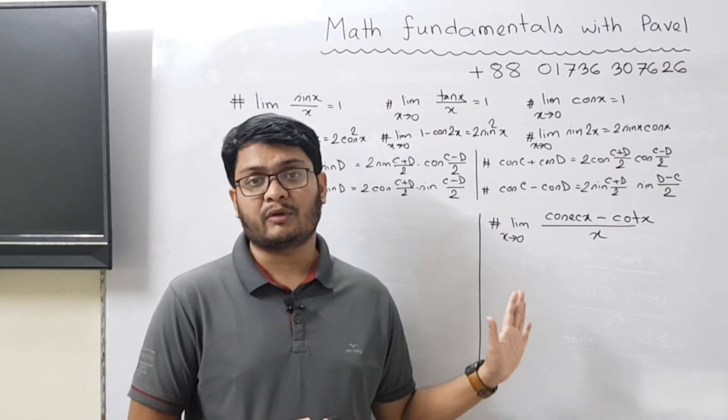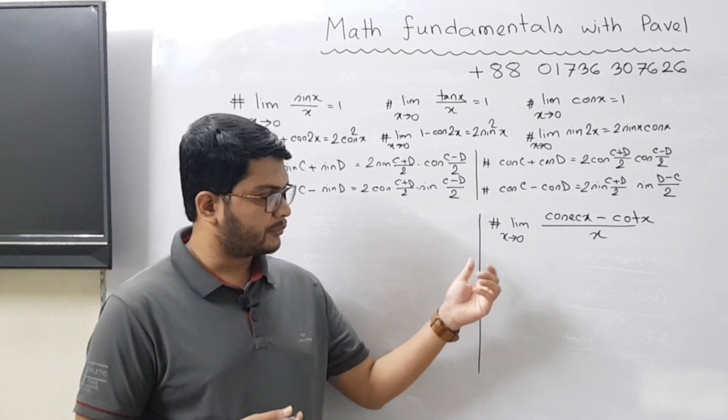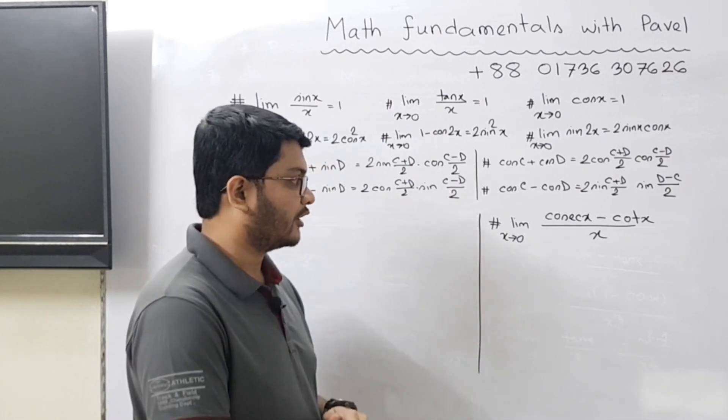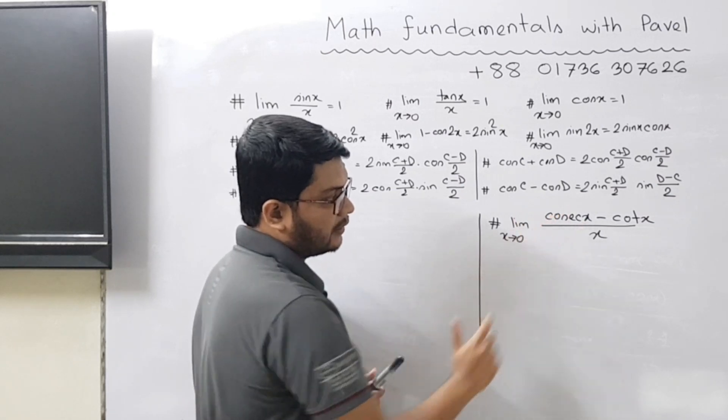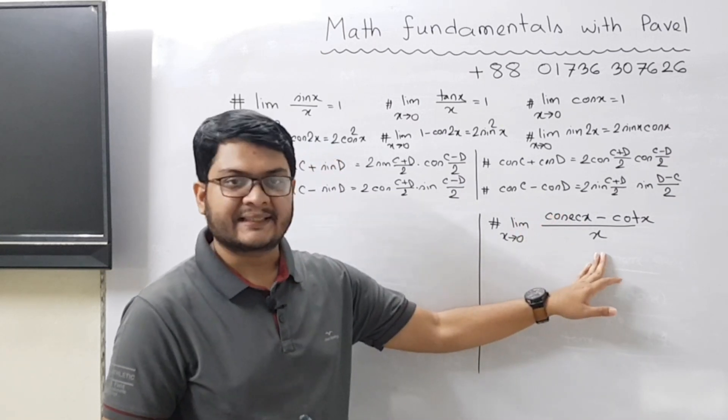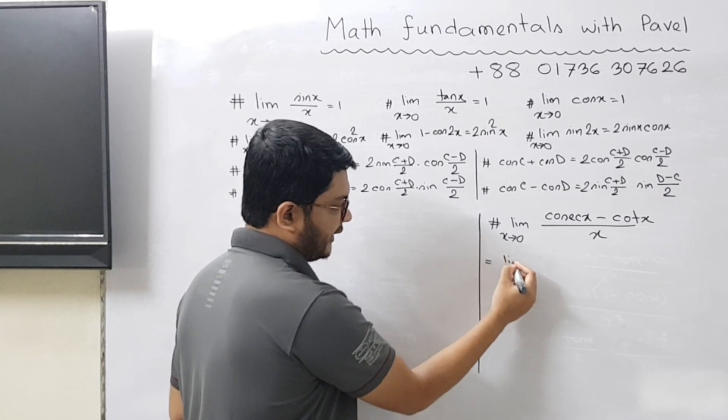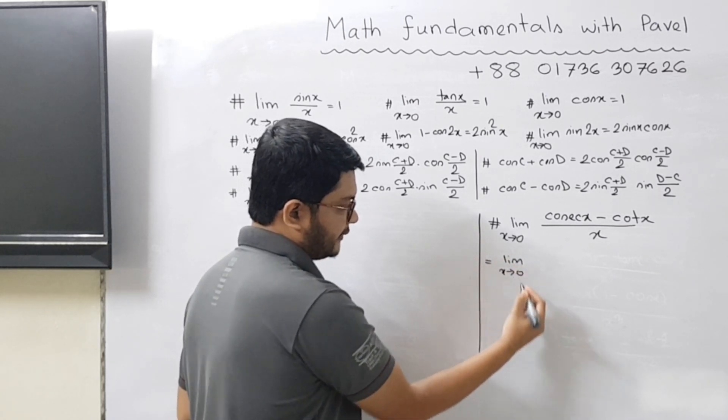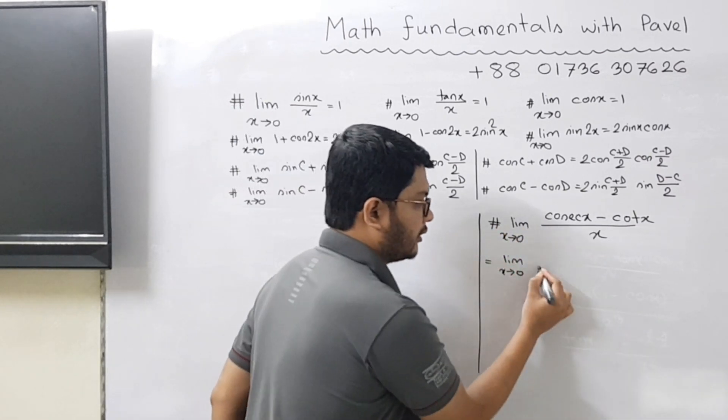That will help you understand this particular video very easily. So let's start. As you can see, the problem statement is already written on the board. It says limit x tends to 0, cosec x minus cot x divided by x. So what we will do in the next line is convert cosec x as 1 divided by sin x.